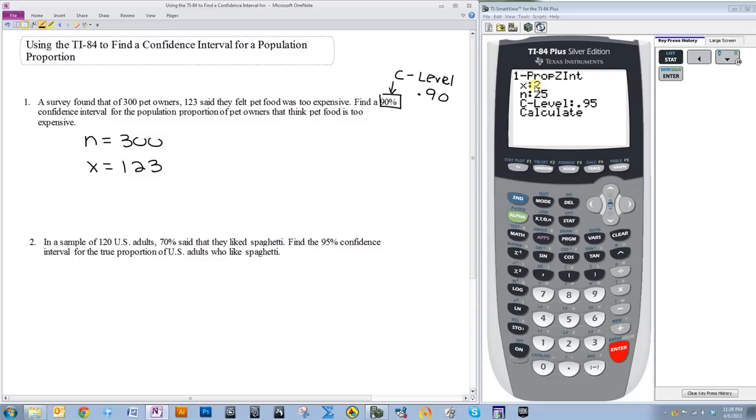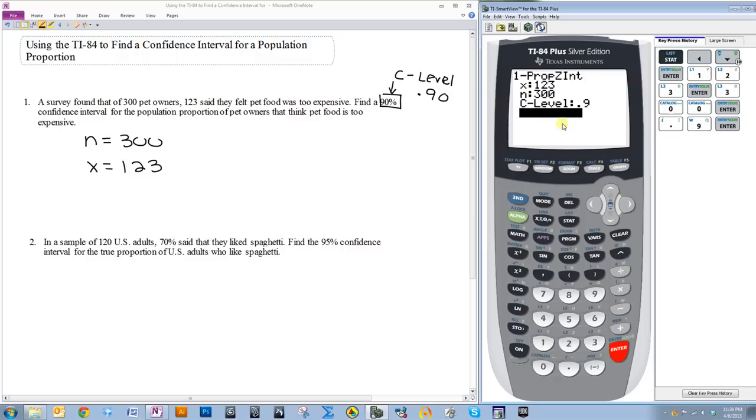So, for X, I'm going to put 123. For N, I'm going to put 300. And for C level, I'm going to put .9.